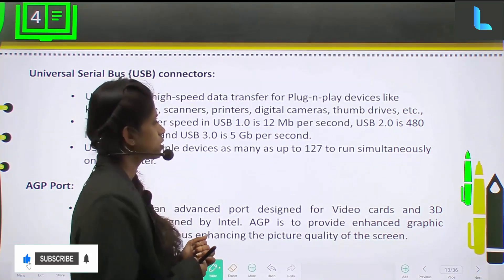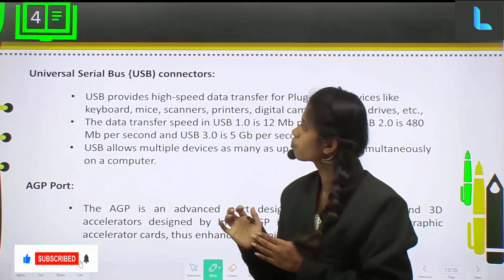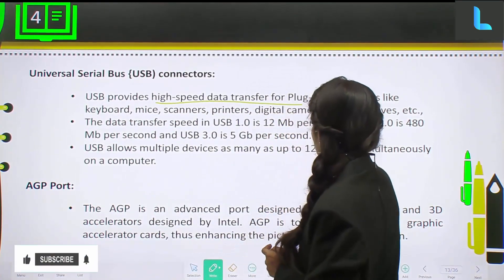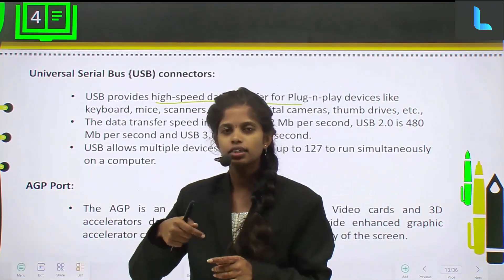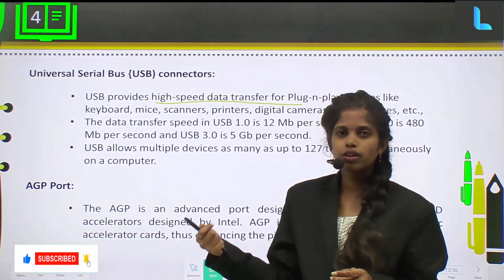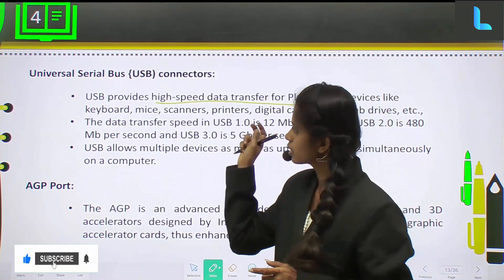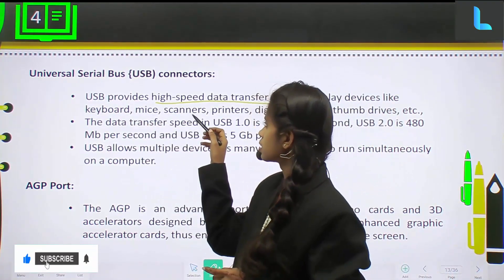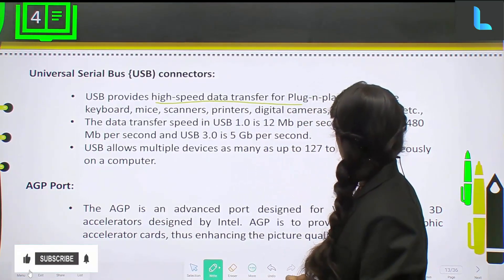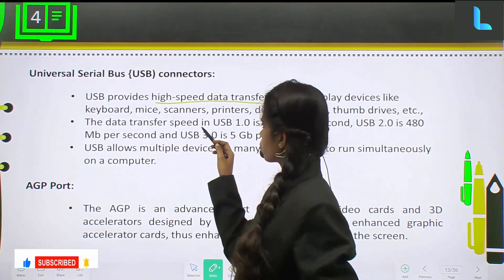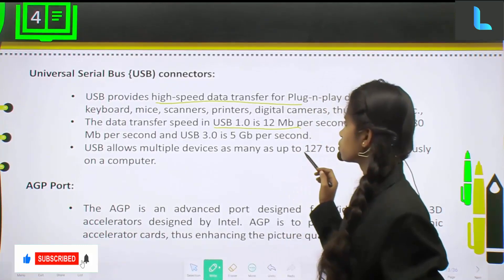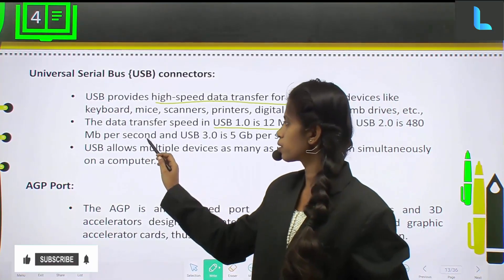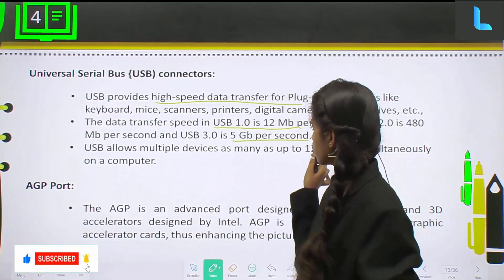Next one is USB connectors. USB provides high-speed data transfer for plug-and-play devices. If you externally want to connect something to the computer, you will use USB. It provides high-speed data transfer for plug-and-play devices like keyboard, mic, scanners, printers, digital cameras, thumb drives, and more. The data transfer speed in USB 1.0 is 12 MB per second, in USB 2.0 it is 480 MB per second, and in USB 3.0 it is 5 GB per second.